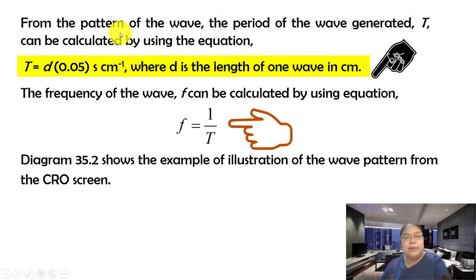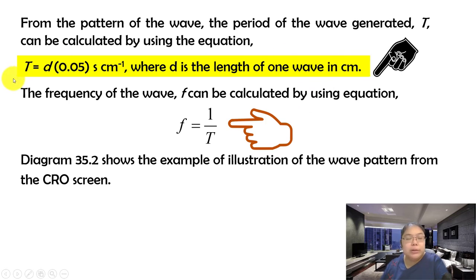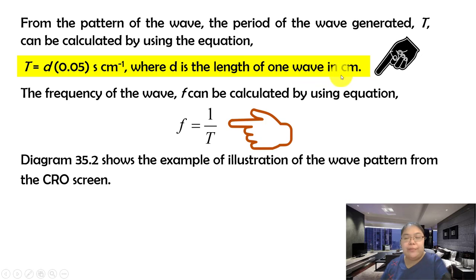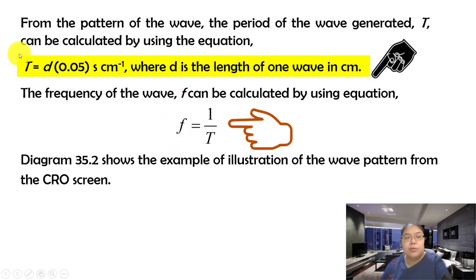The period T of the wave can be calculated using the formula: T = d × 0.05, where d is the length of one complete wave in cm, and the unit is seconds per cm. The frequency f can then be calculated as f = 1/T. Make sure you follow this formula for all calculations later.